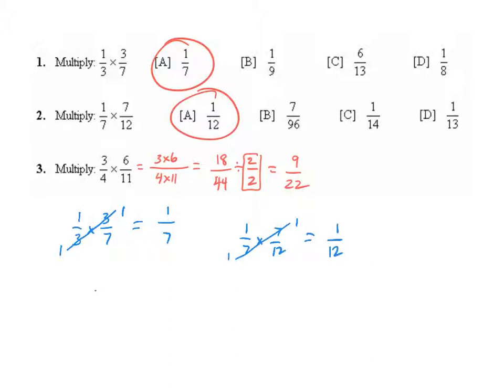And on number 3, 3/4 times 6/11, we can cross-simplify by pulling out a 2. 6 divided by 2 is 3, and 4 divided by 2 is 2. Then we get 9/22 directly without having to do any simplifying at the end of the problem.